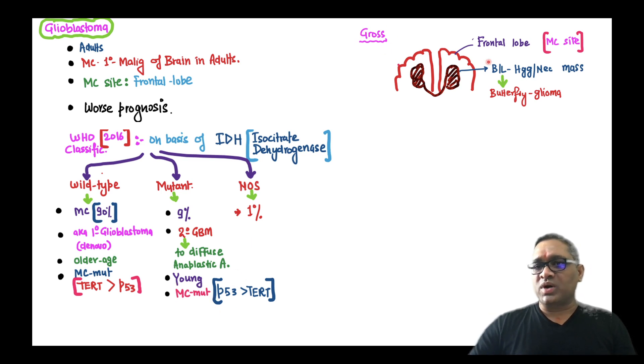On gross examination of this tumor, you will see most common site is the frontal lobe. Bilateral hemorrhagic necrosis mass will be seen because they are highly vascular tumors. They will cross the midline and this is the appearance which is the real reason for the name butterfly glioma.